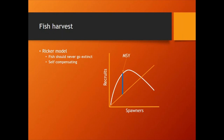Given this model, fish should basically never go extinct, because even with few adults down at the low end, they should have more babies the next year, which keeps increasing. The left portion of the graph is always above that one-to-one replacement line — it's what we call self-compensating.